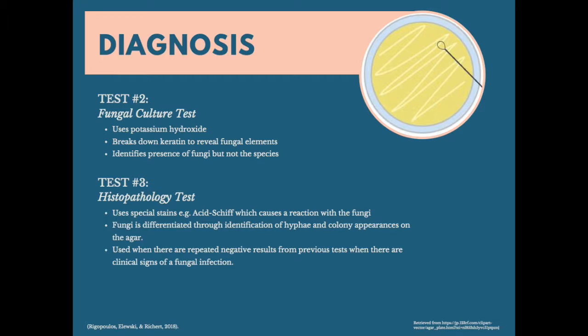If visual microscopic examination and cultures are not providing an accurate diagnosis, then histopathology is used to identify the fungi. Histopathology involves examination of different sections of the nails after staining, using special stains such as periodic acid-Schiff, which causes a reaction. The fungi are differentiated using different identifying structures such as hyphae or the appearance of colonies on agar.